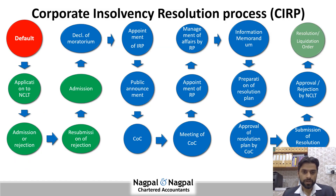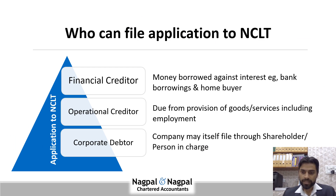Now let us understand who can approach NCLT and file an application, and who cannot. Either a financial creditor — a single creditor or a group of creditors — can approach NCLT and file an application. An operational creditor can also approach and file an application. Even the corporate debtor itself, if it is insolvent and has committed a default, can approach NCLT and file an application through its shareholders or person in charge.